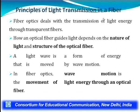The principle of light transmission in a fiber: fiber optics deals with the transmission of light energy through a transparent fiber. How an optical fiber guides light depends on the nature of the light and the structure of the optical fiber. Total internal reflection takes place depending on the structure — there is a requirement of the optical fiber to achieve total internal reflection so that the light signal can be sent from one place to another. In fiber optics, wave motion is the movement of light energy through an optical fiber.